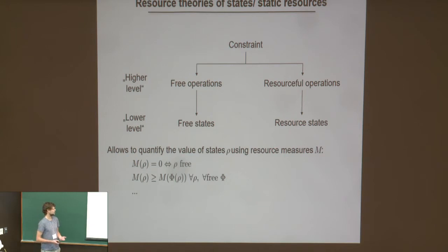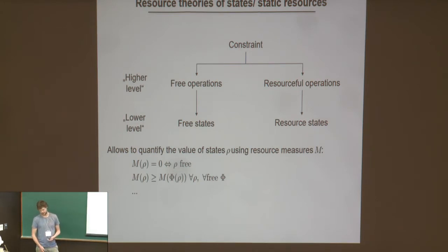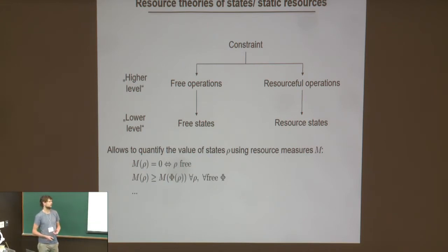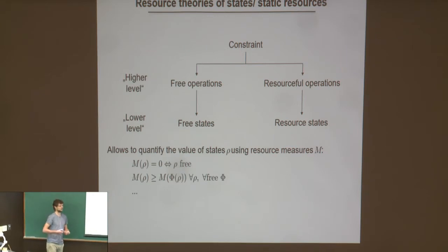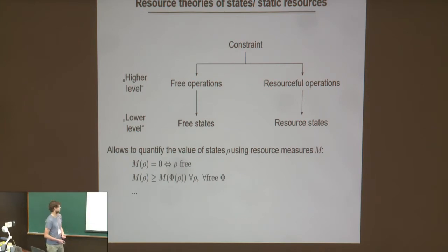These functionals satisfy certain axioms. For example, one can demand that they should be faithful — they should be zero if and only if the state is free. And the most important axiom: they should be monotonic, which captures the idea that doing something free cannot increase the value of states. In addition, sometimes one demands additional constraints.